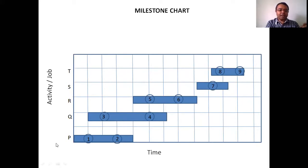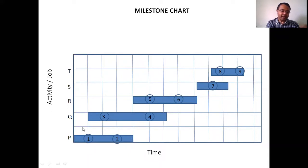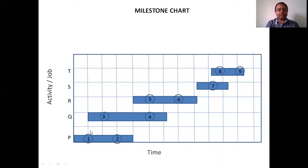The main disadvantage of the bar chart was that we couldn't find the sequence of activities or do controlling and updating. By doing some modification to the bar chart, we go for the milestone chart. In the milestone chart, that disadvantage is taken care of. One total activity can be divided into sub-activities, and by provision of milestones, we can show the sequence as well as the dependency.